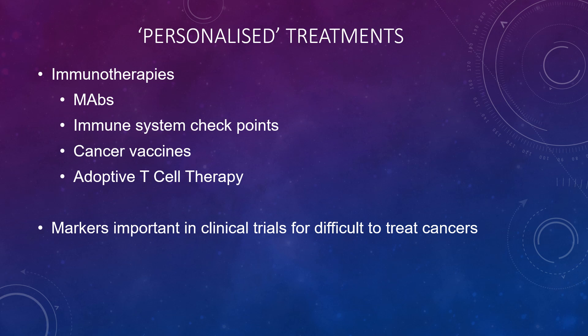Personalised treatment can also be undertaken, such as immunotherapies including monoclonal antibodies, immune system checkpoints, cancer vaccines, and adoptive T-cell therapy. Markers are important in clinical trials but are difficult to use directly for treating cancer.